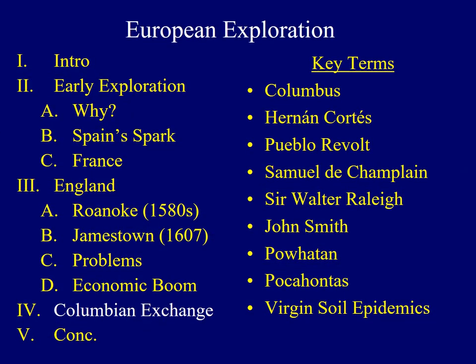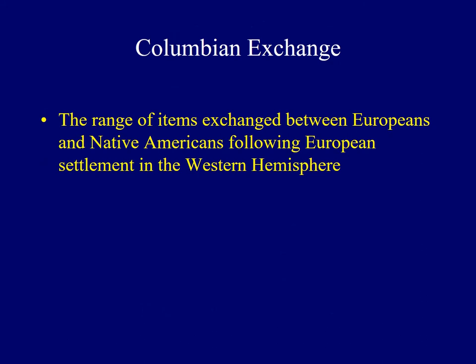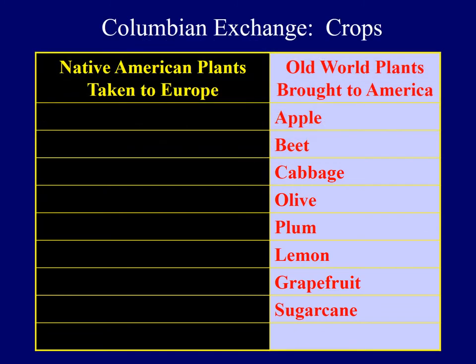We'll now discuss the final concept to be addressed in this lecture — something referred to as the Columbian Exchange. The Columbian Exchange is a phrase used to describe one aspect of the interaction between Europeans and Native Americans. It involves a wide range of items brought from the so-called Old World to the New World, ranging from plants, animals, diseases, ideas, and trade goods. Among plants brought from Europe to America were apples, beets, olives, and sugar cane.